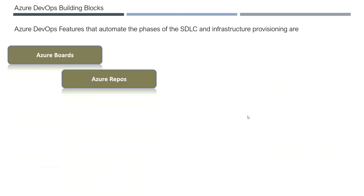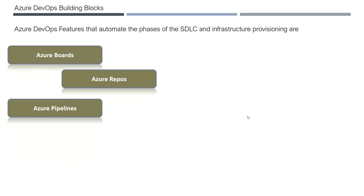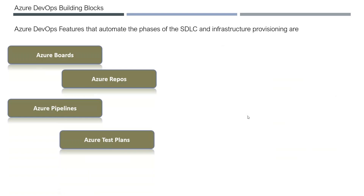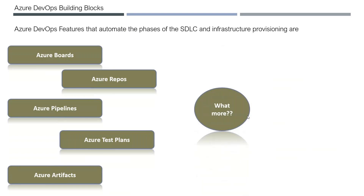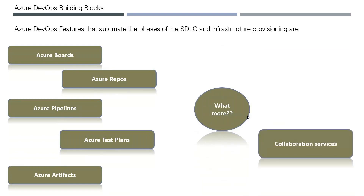Azure DevOps automates all the manual activities in the software development lifecycle. For this you have: Azure Boards for requirements management, Azure Repos for code management, Azure Pipelines for builds and deployments, Azure Test Plans for testers, and Azure Artifacts to maintain reusable components.